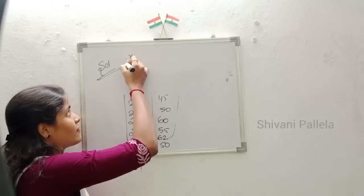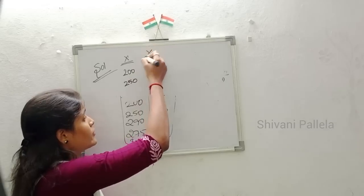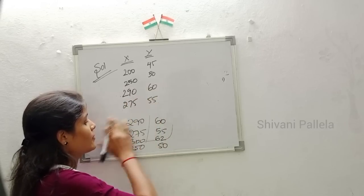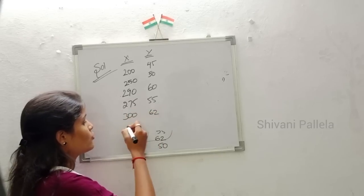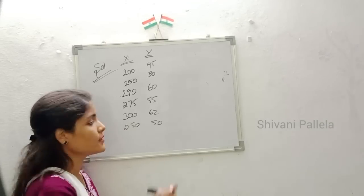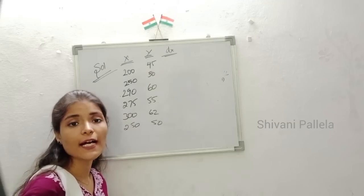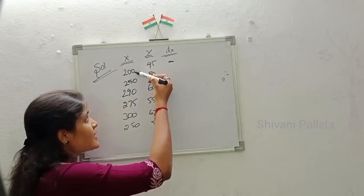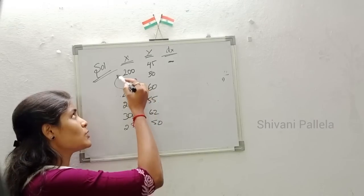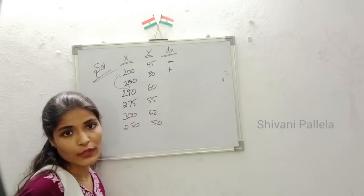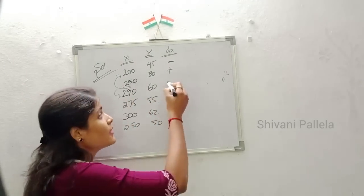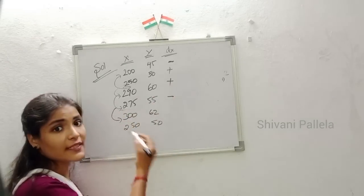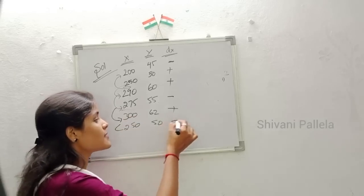Now we need to calculate dx. For the first value, put a hyphen (no comparison). For the second value, 250 is more than 200, so dx = plus. Then 290 is more than 250, so plus. Then 275 is less than 290, so minus. Then 300 is more than 275, so plus. Then 250 is less than 300, so minus. These are the dx values.